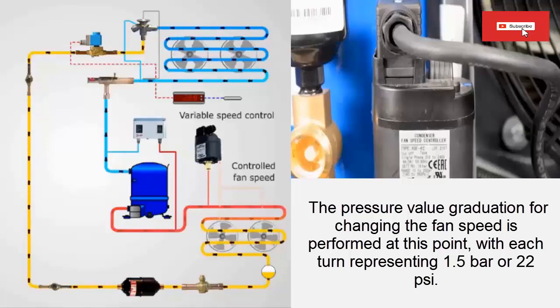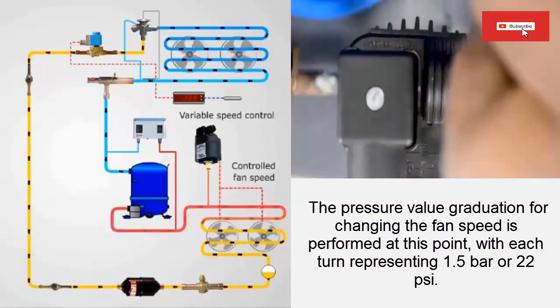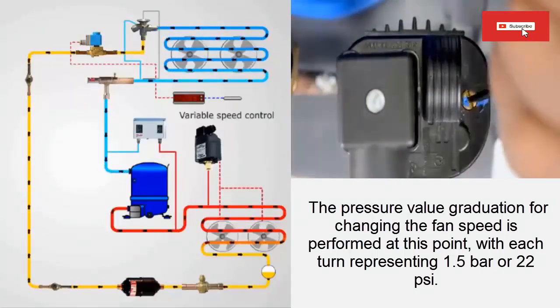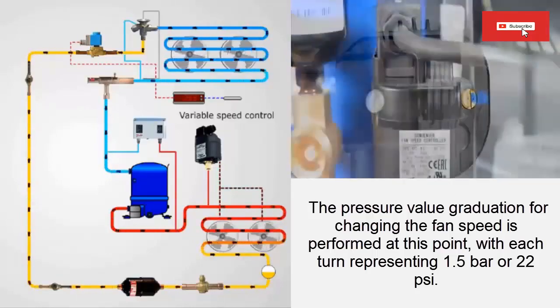Variable speed control for condenser fans has been around for over 50 years. The first variable speed drives were pressure actuated drives. Electronic controllers were developed in the 1980s.